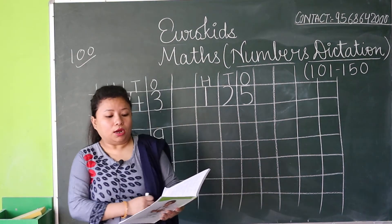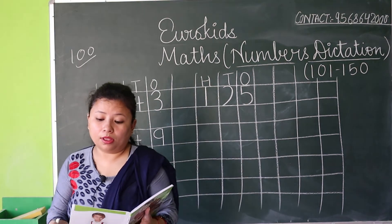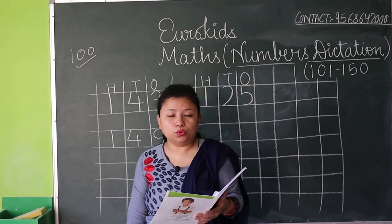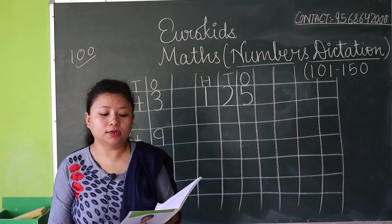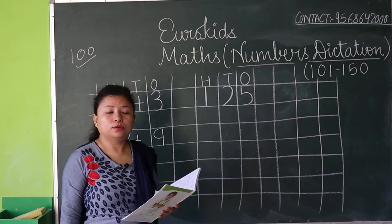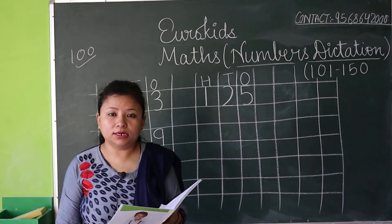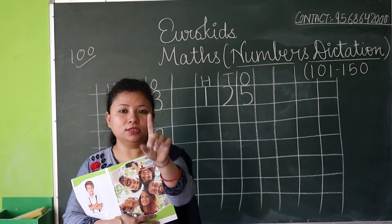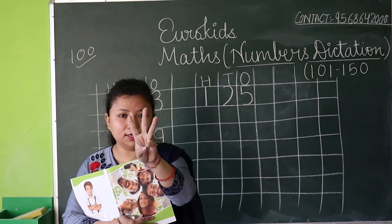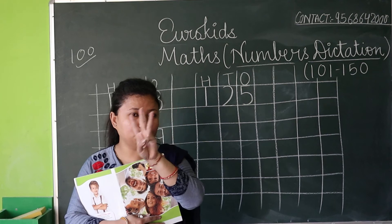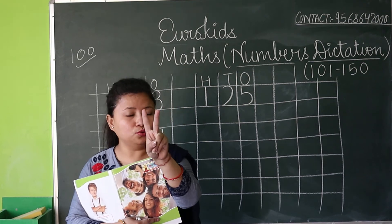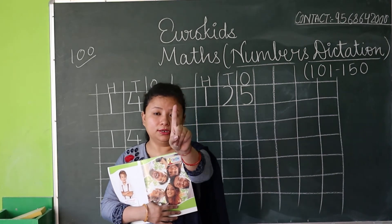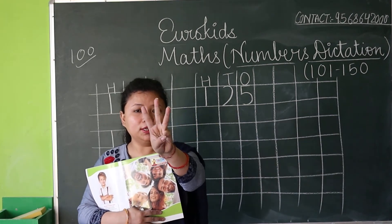Now my next number is 132. 100 — open your fingers — 130, 30 means three, and two. You have to watch ma'am and do like ma'am. 132 — 130 means three and two — 132.